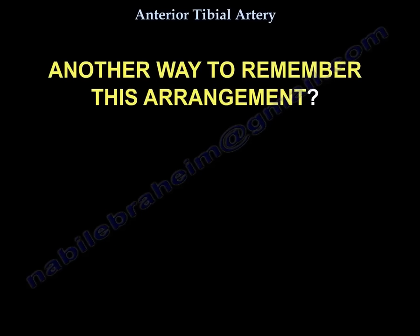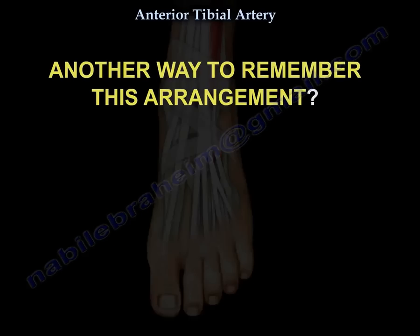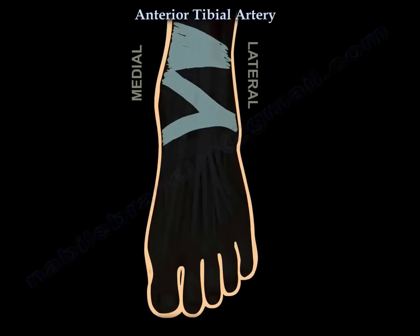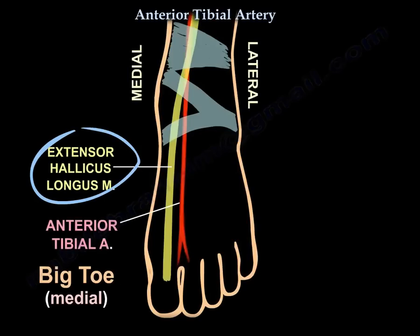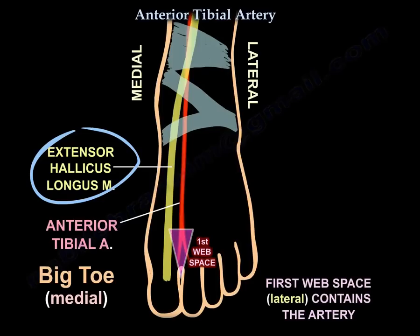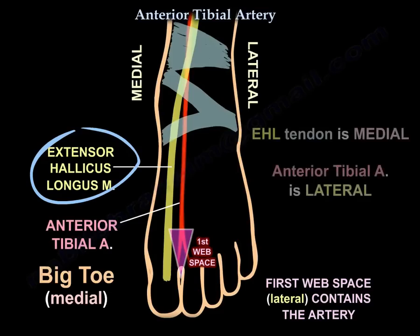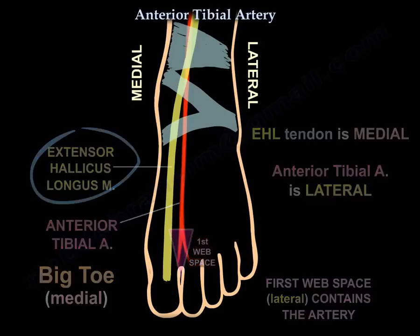Another way to remember this arrangement in front of the ankle: the extensor hallucis is medial because the big toe is medial. The first web space is lateral, and this first web space contains the artery. So the tendon is medial and the artery is lateral to it.